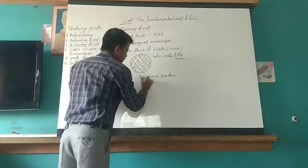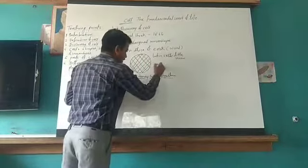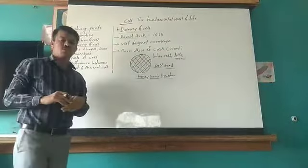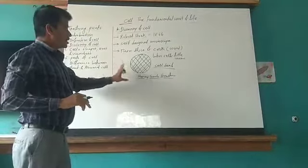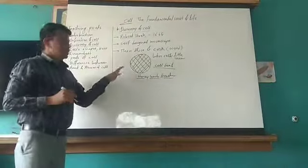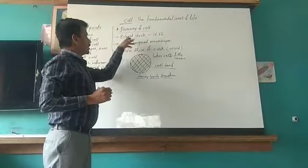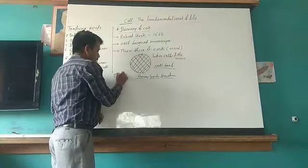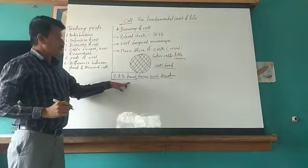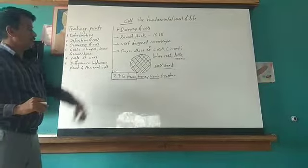After this discovery of the cell, Robert Hooke — though he observed under his microscope — these cells were dead cells, because it was a separated part of the tree, the thin slice of the cork or the bark of the tree. So the first discovered cells were dead. After 1665, another well-known scientist came — Anton van Leeuwenhoek — and he further modified Robert Hooke's microscope. After modification, Leeuwenhoek's microscope was 275 times more powerful, allowing a detailed study of cell structure.